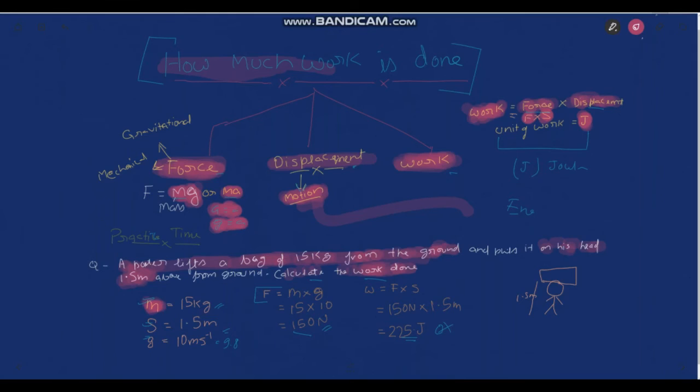M is equal to 15 kg, S is equal to, S means displacement, so S is equal to 1.5 meter and G is equal to, G is acceleration due to gravity because a force is being applied by the gravity because it is going up. You must have read about this in the gravity chapter also. So we have noted these three points.